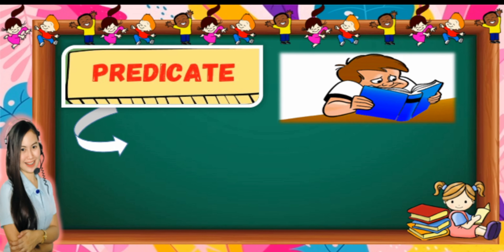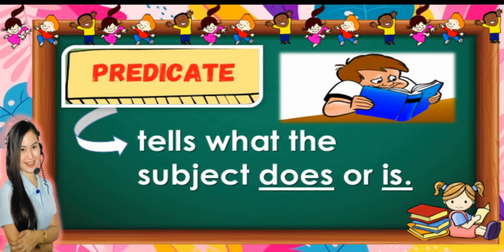What about the predicate? When we say predicate, what does it mean, grade 4? Let's read the definition of a predicate. The predicate tells what the subject does. The predicate usually begins with a verb.